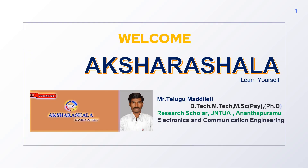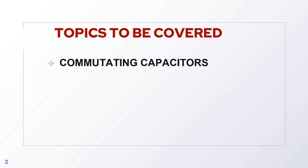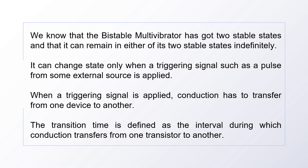Welcome to Akshar Shala. Today we are going to discuss about commutating capacitors in this session. We know that the bistable multivibrator has got two stable states and that it can remain in either of its two stable states for an indefinite time. Suppose if we want to induce any change in its stable state, it requires external triggering signals such as a pulse or spike from some external source.